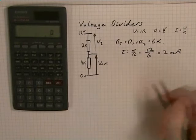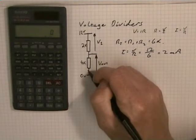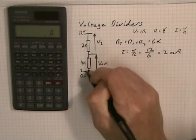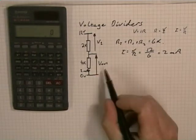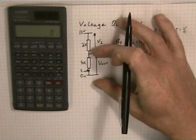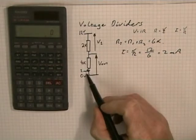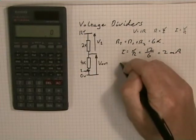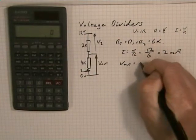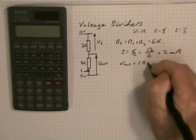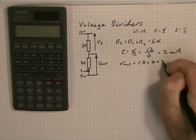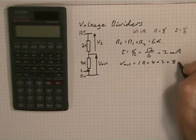So now, I've found an answer, so I'll stick that on my diagram, 2 milliamps. Down the bottom here, where V out is, I now know the resistance and the current. So V out equals I times R equals 4 times 2 equals 8 volts.